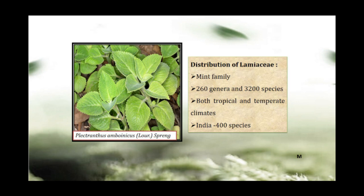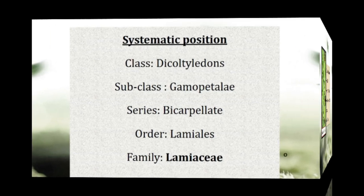The family has 260 genera and 3200 species, and it is worldwide distributed. The members of this family are found in both tropical and temperate regions. In India, it is represented by 400 species.